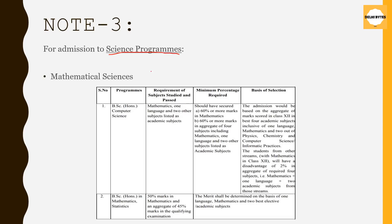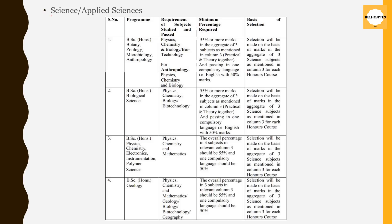Now coming over to the Science programs. This is a table that Delhi University has given in its UG Bulletin of 2018. This is for Mathematical Sciences, Science, and Applied Sciences. If you are interested in taking admission in BSc Honors for Botany, Zoology, Microbiology, Anthropology, Biological Sciences, Physics, Chemistry, or Geology, these are the criteria and minimum percentage required.